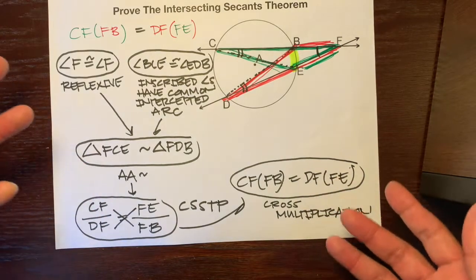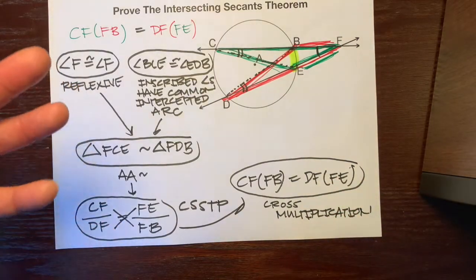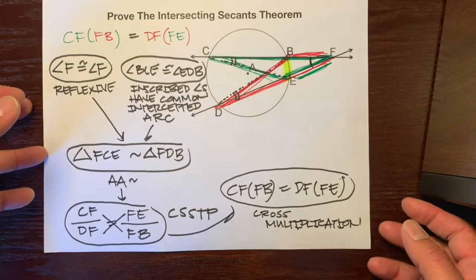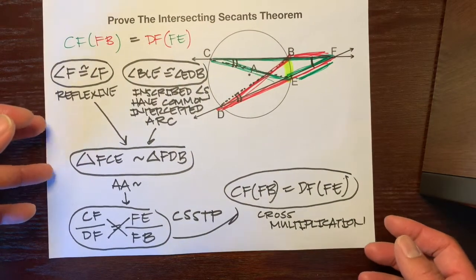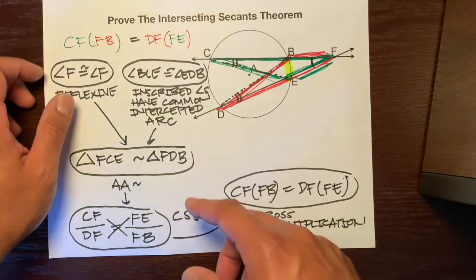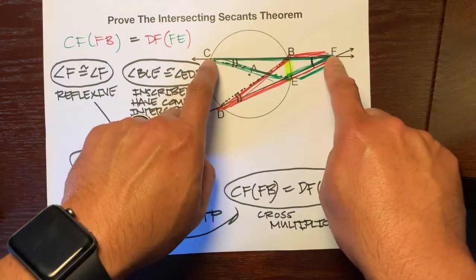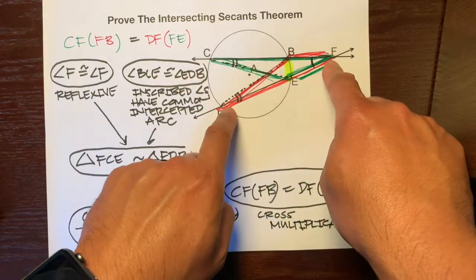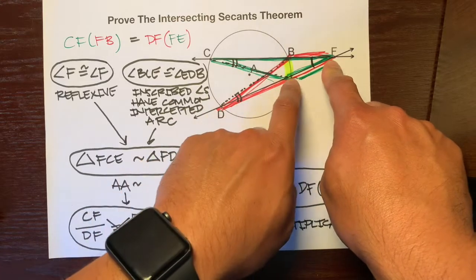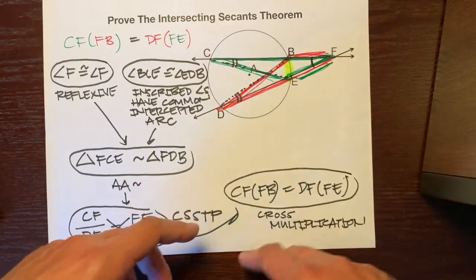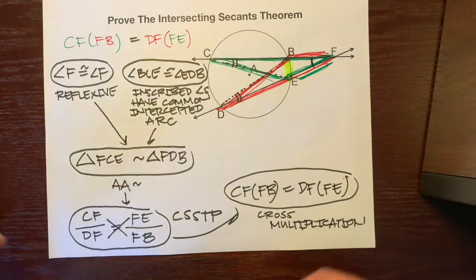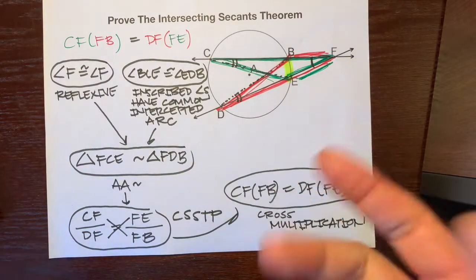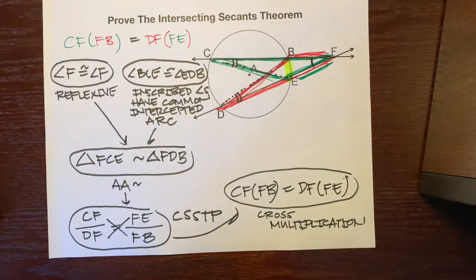So there's a real mathematical reason why the intersecting secants theorem works. Thanks for following along. To recap: the entire segment times the piece on the outside equals the entire segment times the piece on the outside. Hope you enjoyed that — have a great day, this is Mr. Q.